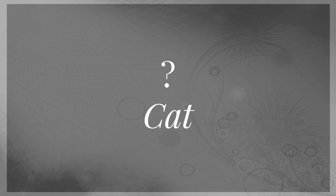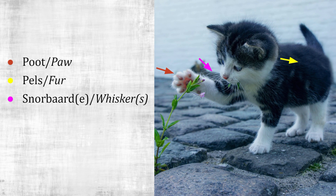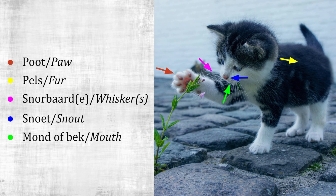Cat. Can you remember what this animal is called in Afrikaans? This one should be quite easy. Poet — paws. Pals — fur. Snorboard — whiskers. Snorboard is the singular form but it's more common to use the plural form. Snout — snout. Snout can also be called neus, N-E-U-S, meaning nose. Mont — mouth. And never call a human's mouth a bek; it's very rude.